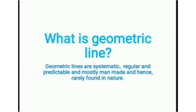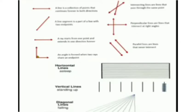What is a geometric line? Geometric lines are systematic, regular, and predictable. They are mostly man-made and hence rarely found in nature. I'll show you some geometric lines — horizontal, vertical, diagonal, and different types of planned lines. These are the geometric lines.